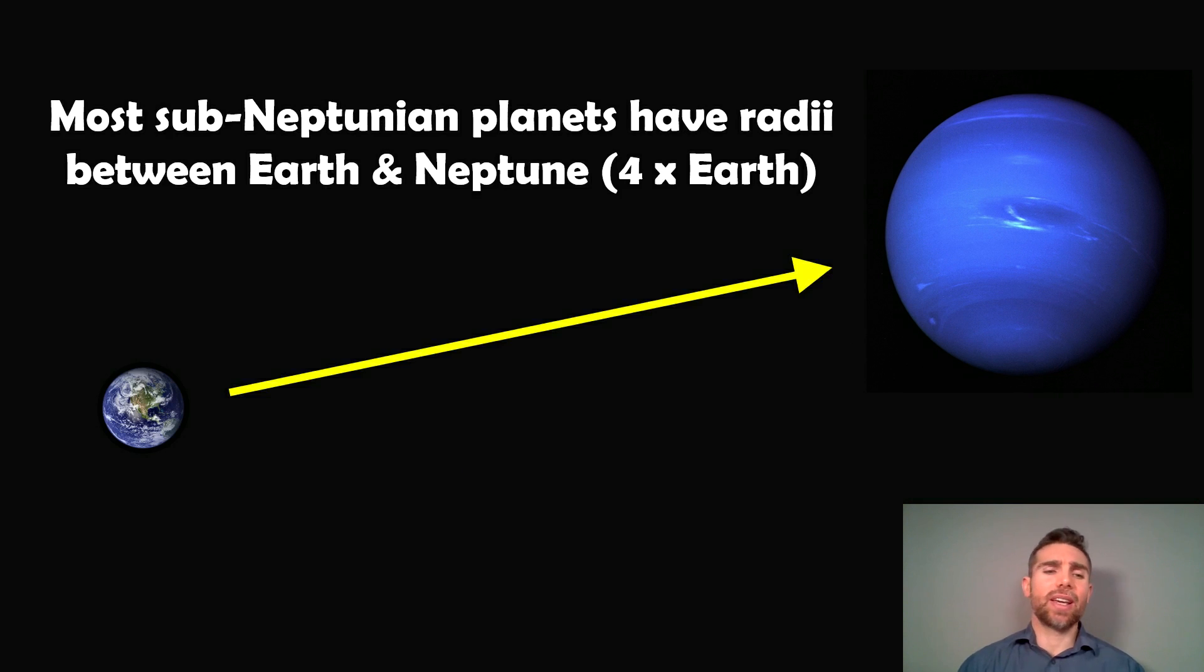But size-wise, they have radiuses between one Earth radius and one Neptune radius. That keeps them sub-Neptunian. They're less than Neptune. And that means they're between one and four times the radius of Earth.